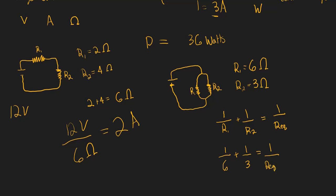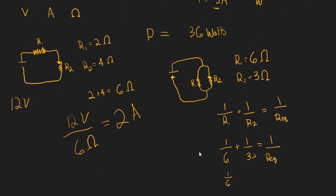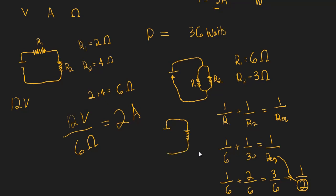To add those fractions, we need a common denominator. We multiply 1 over 3 by 2 over 2, giving us 1 over 6 plus 2 over 6 equals 3 over 6. Three over 6 is the same as 1 over 2, so the equivalent resistance is 2 ohms. We could redraw this circuit as having just one resistor with a resistance of 2 ohms.